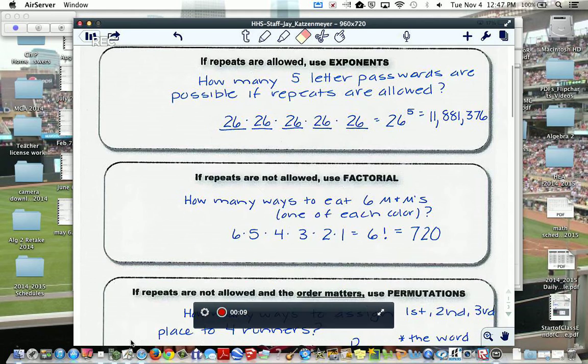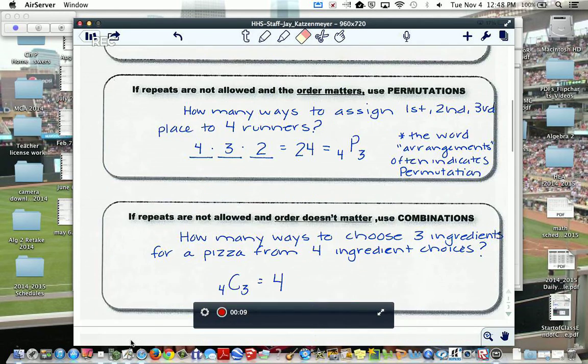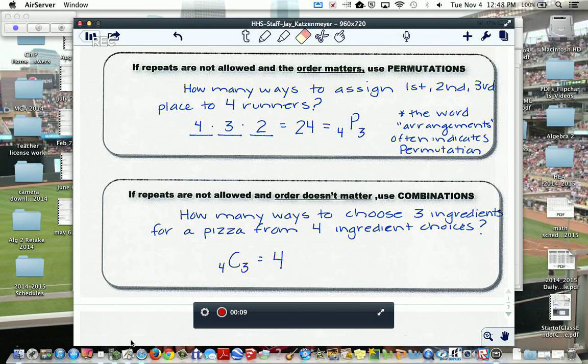Now the next problem is if repeats are not allowed, we are saying that order matters. We're going to use permutations. How many ways to assign first, second, and third place if there are four runners in the race? So it's four times three times two, and really it should be times one, but you don't need to multiply by one, and that's 24.